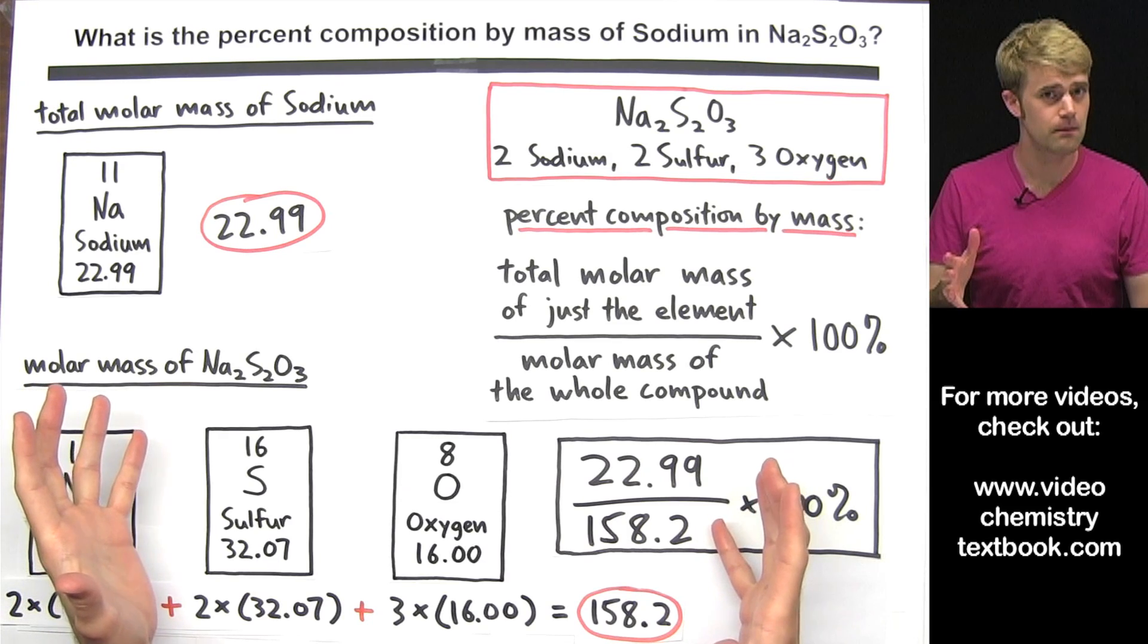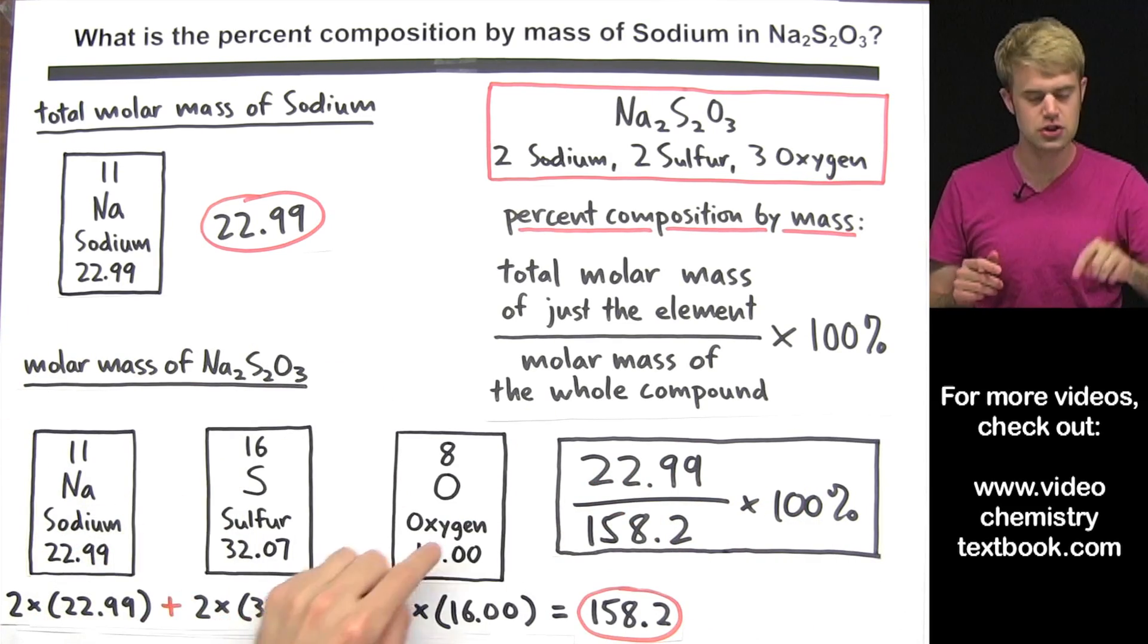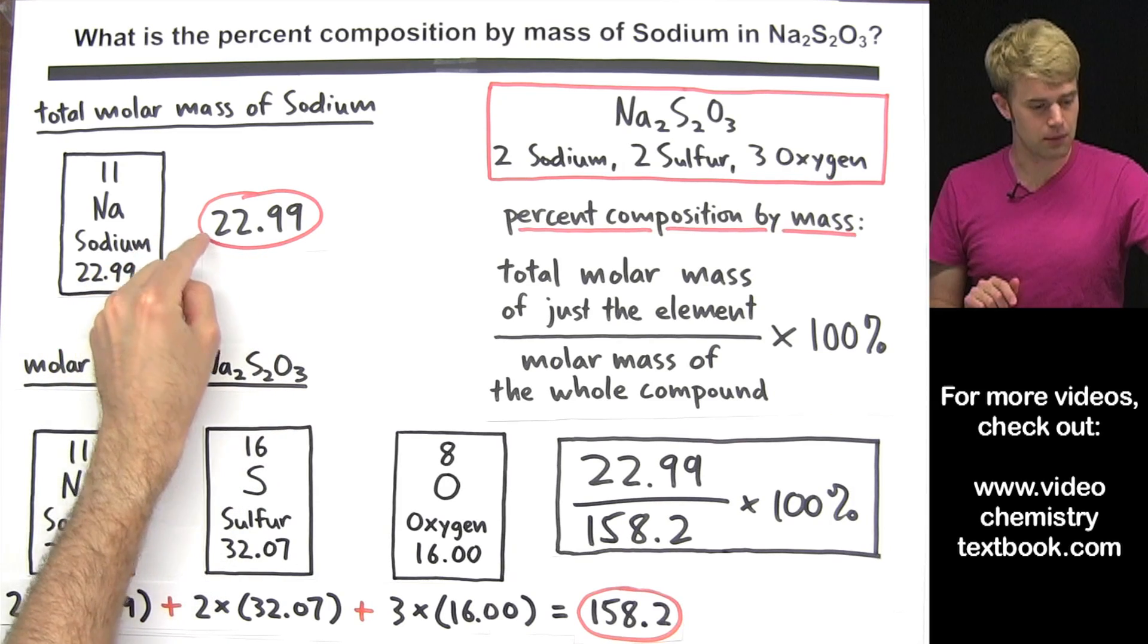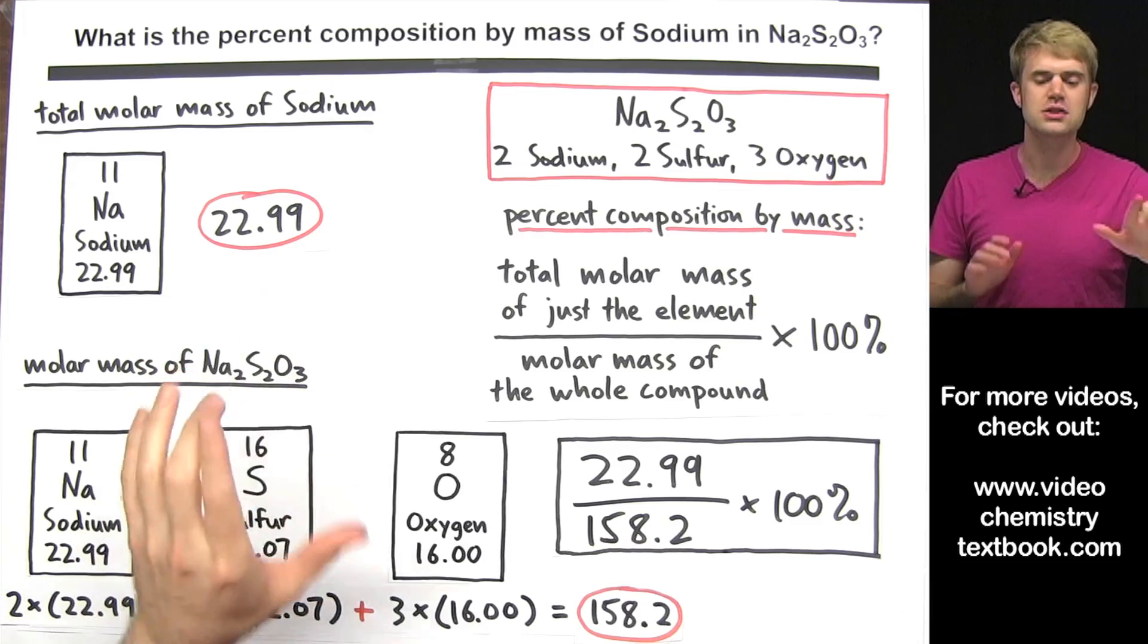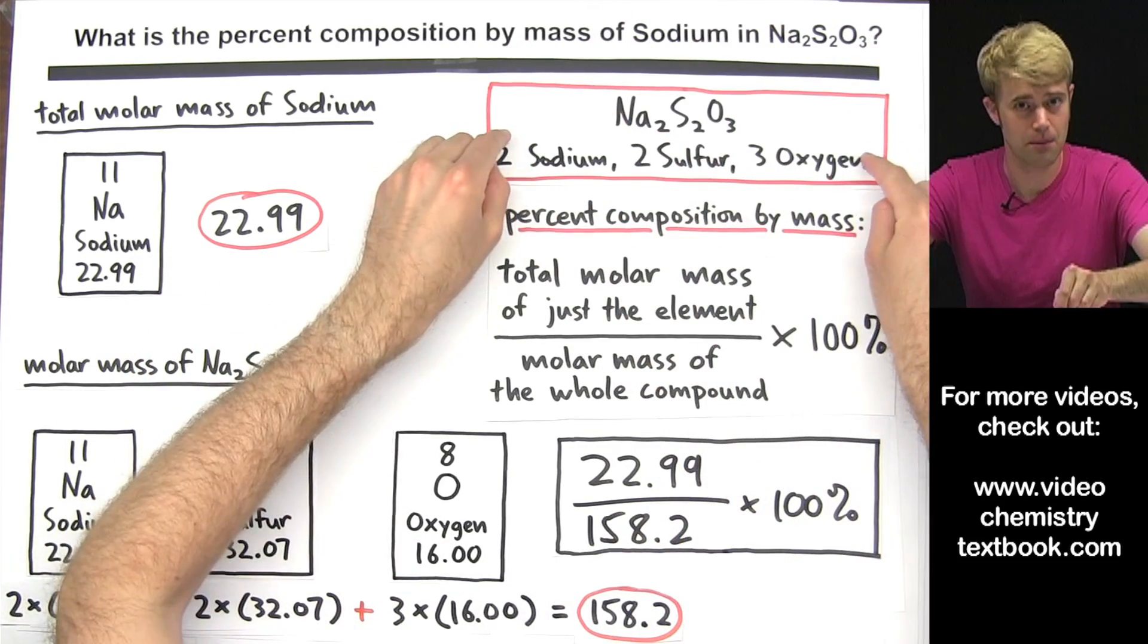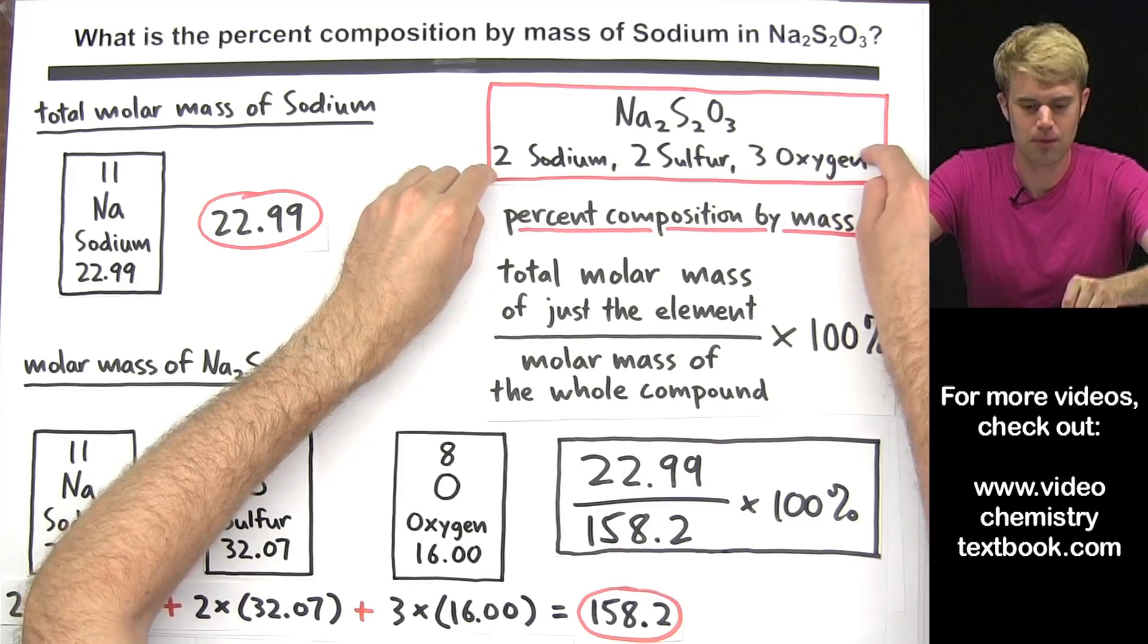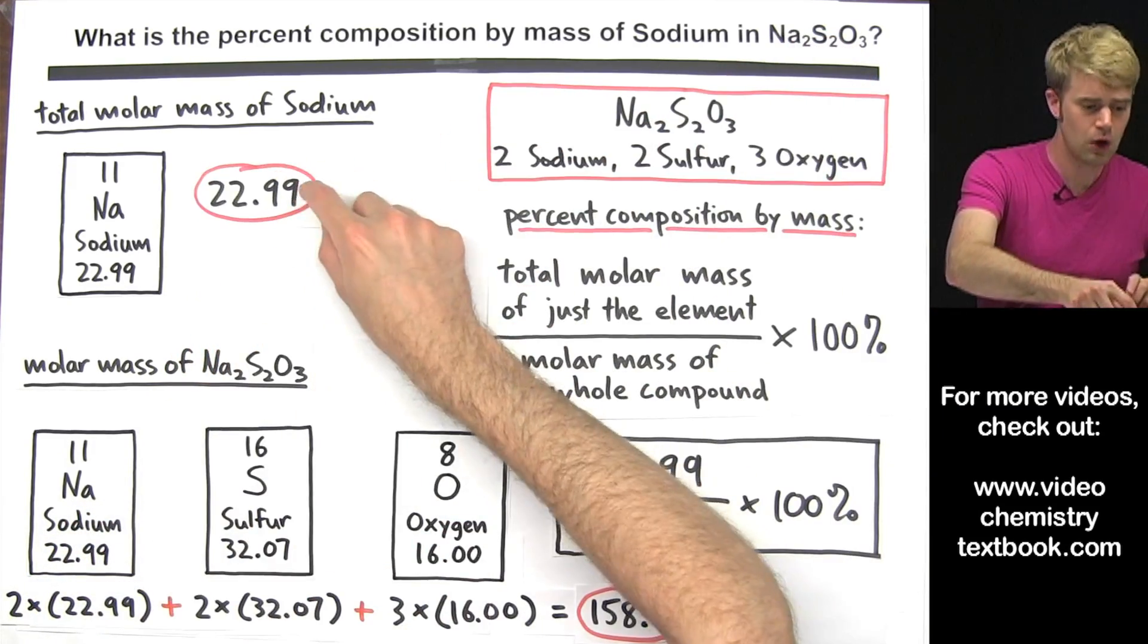Can you spot the mistake here? Well, it's not down here with the molar mass. I'm doing these calculations completely correctly. The problem is up here specifically with this number. This number, 22.99, it is the molar mass of sodium but it's not the total molar mass of sodium in this compound. This number here is the molar mass of one sodium but as you can see from the chemical formula here there are two sodiums in this compound.